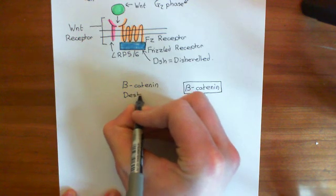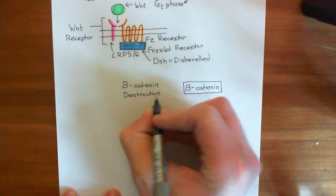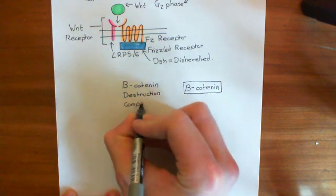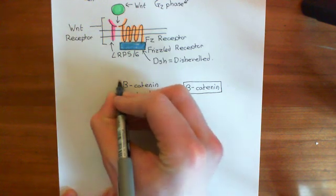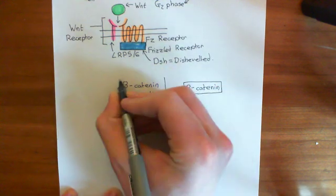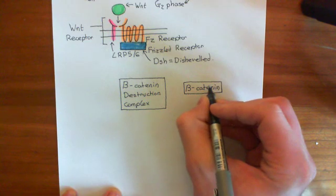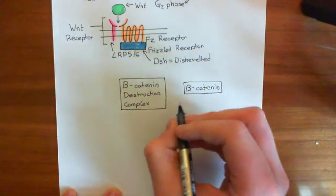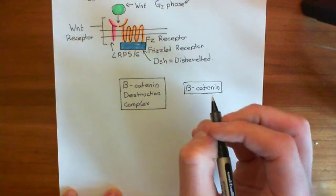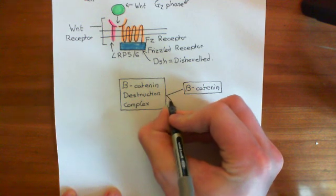The beta-catenin destruction complex doesn't actually break it down. Instead, what it does is target the beta-catenin for ubiquitination. This beta-catenin destruction complex takes in the beta-catenin molecule and adds some sort of group onto it, which then means that beta-catenin can be ubiquitinated, can have a ubiquitin group put on it.